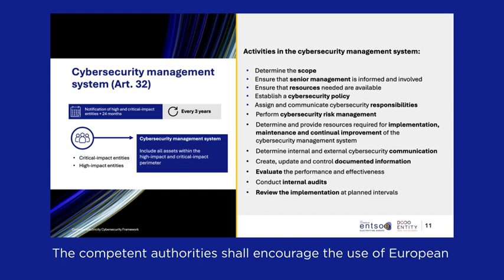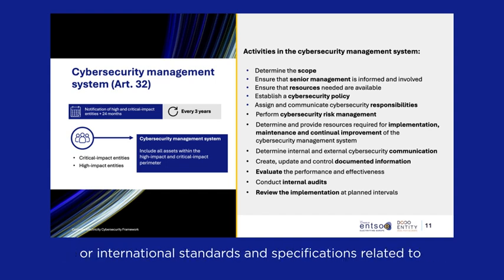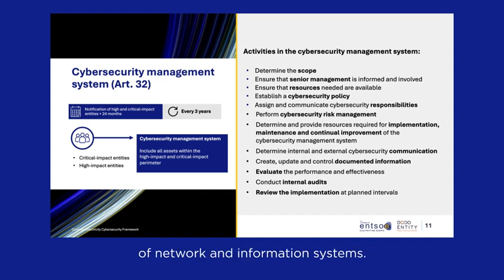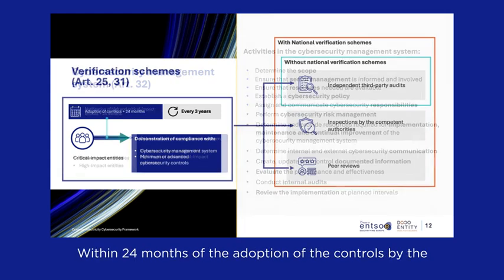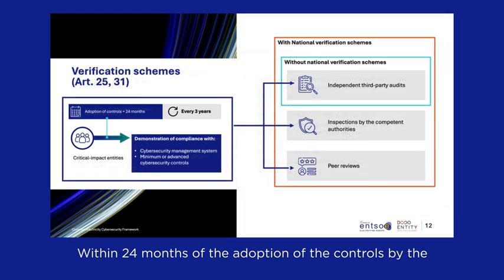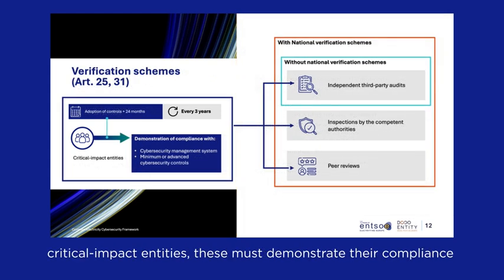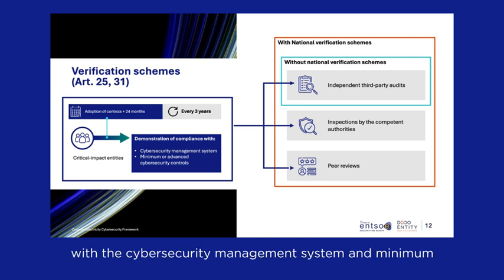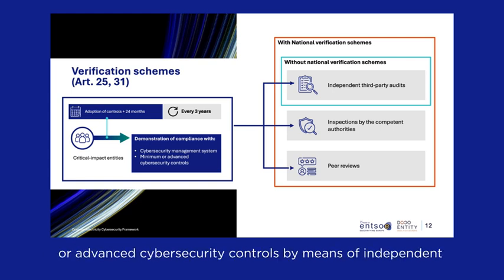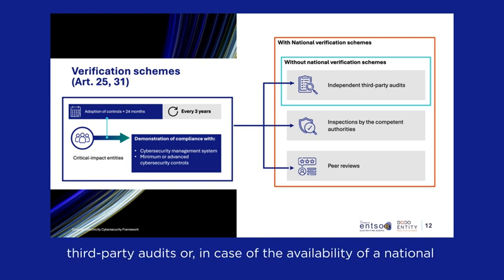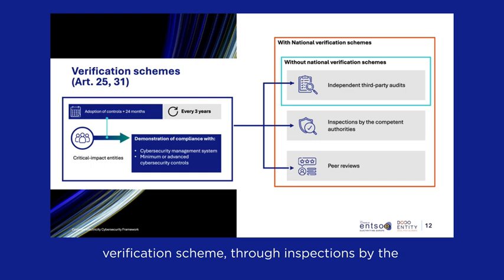The competent authorities shall encourage the use of European or international standards and specifications related to management systems, relevant to the security of network and information systems. Within 24 months of the adoption of the controls by the critical-impact entities, these must demonstrate their compliance with the cybersecurity management system and minimum or advanced cybersecurity controls by means of independent third-party audits, or, in case of the availability of a national verification scheme, through inspections by the competent authority or peer reviews.